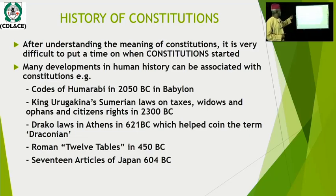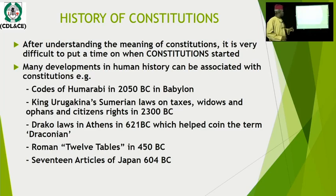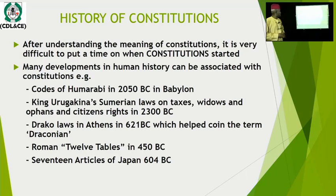As far back as 2050 BC, it has been recorded that in Babylon, they had what we call the Code of Hammurabi — a set of laws they agreed upon. In Sumerian times, King Urukagina was among the first leaders, or sovereigns, who instituted laws to guide how people pay taxes, how widows are treated, how orphans are treated, and certain citizen rights. This was about 2300 BC.